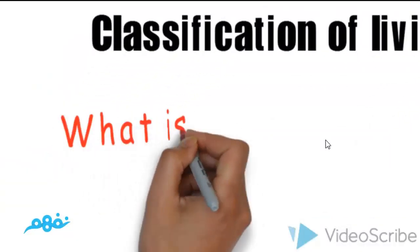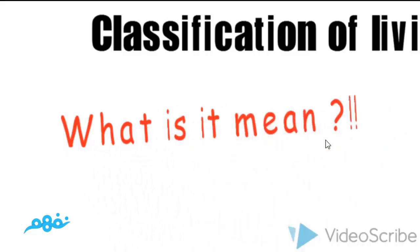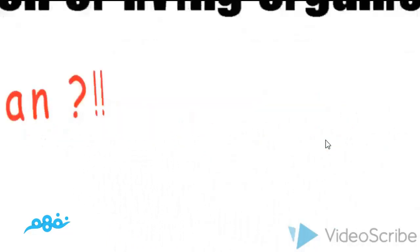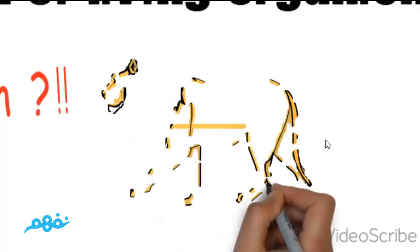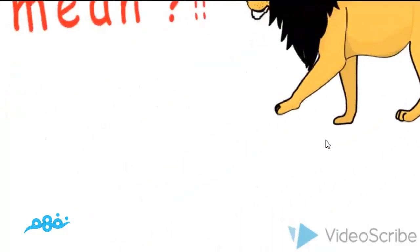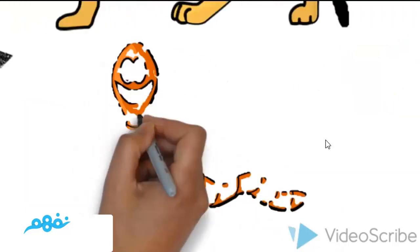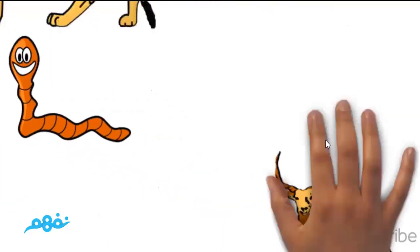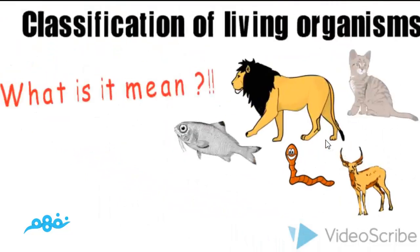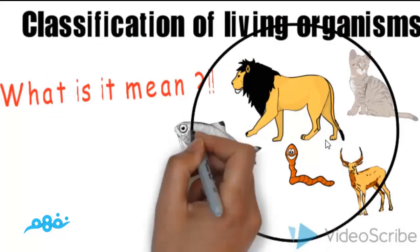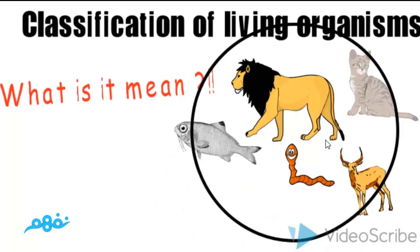Classification - what does that mean? Okay, focus with me. If we have a lion like this I'm drawing now, the big lion, and this fish, and we have a cute cat, and there's a small worm, even a deer - all of this called living organisms. And here we are, we can classify each organism.